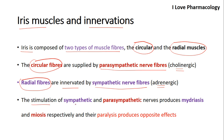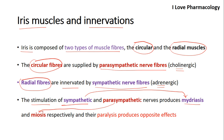Stimulation of the sympathetic nerve fibers innervating the radial fibers leads to dilation of the pupil, called mydriasis. Stimulation of parasympathetic nerve fibers on the circular muscle fibers leads to constriction of the pupil, called miosis. If there is paralysis of these muscles, there will be opposite actions.